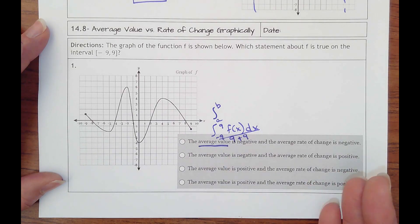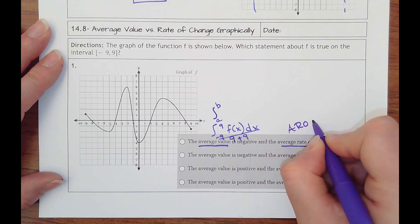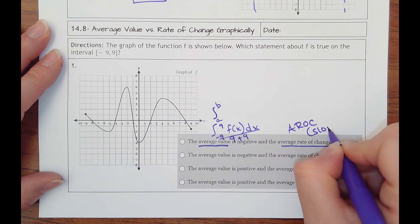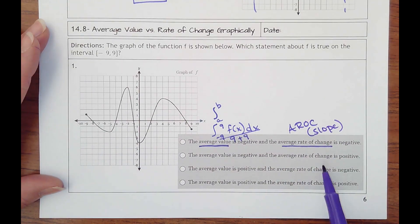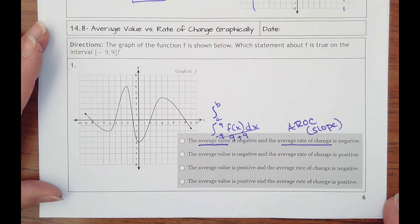So that's average value versus average rate of change. Don't forget that that is just finding the slope. That is just finding the slope of a secant line because the tangent line touches in one spot.